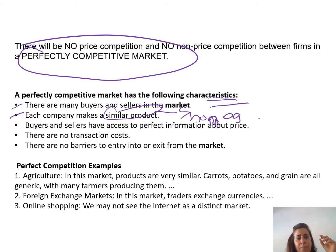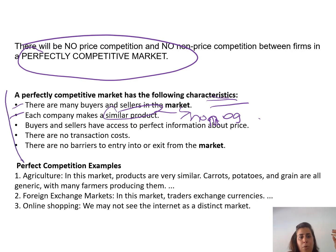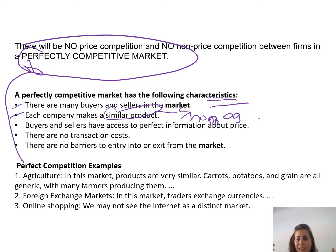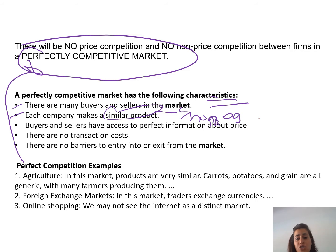There are no transaction costs and no barriers to entry or exit from the market. Some examples of a perfectly competitive market would be agriculture — you cannot say this potato is better than that potato if they are very similar products. You never see advertisements for agricultural products; tomatoes all taste the same. Other examples include foreign exchange markets and online shopping.